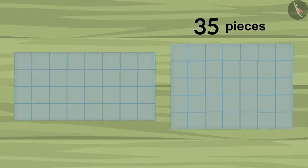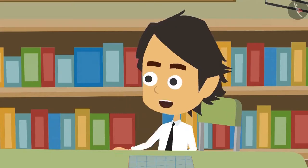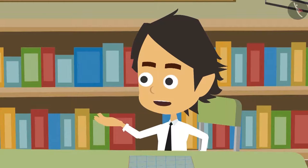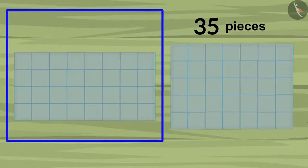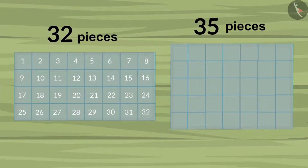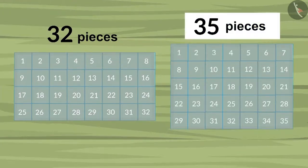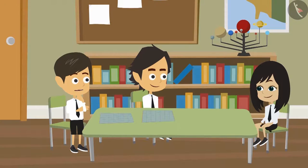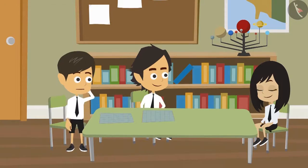Yes, now the pieces are placed correctly. Now you can tell the correct measurement. 32 pieces were required to cover my cardboard whereas 35 pieces were required to cover Ayushman's cardboard. This means that my cardboard is small.